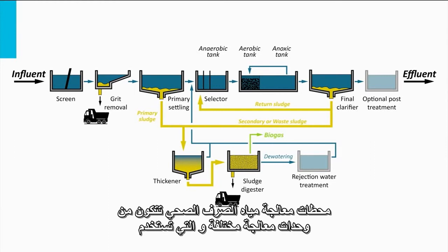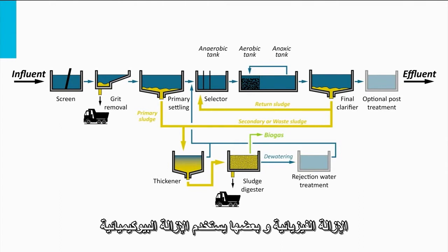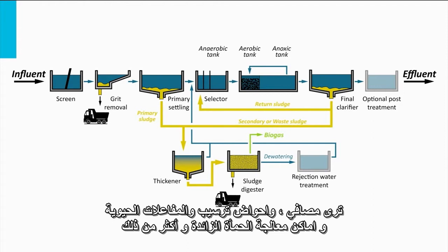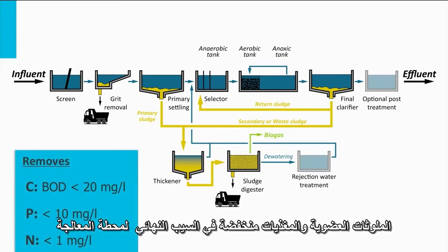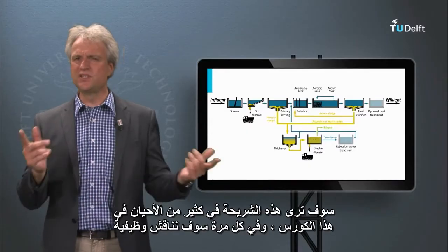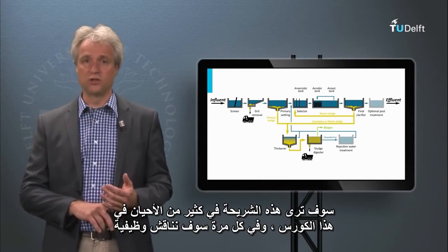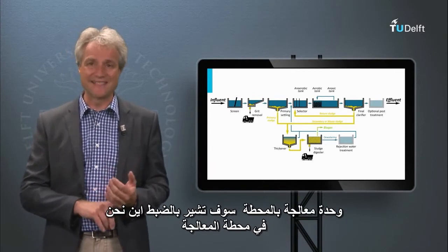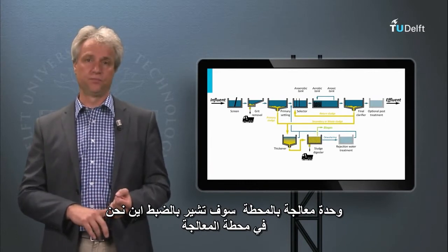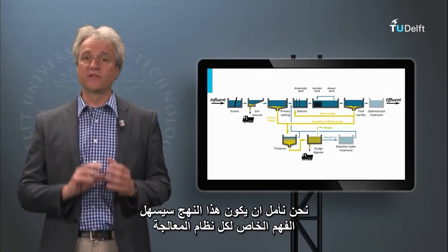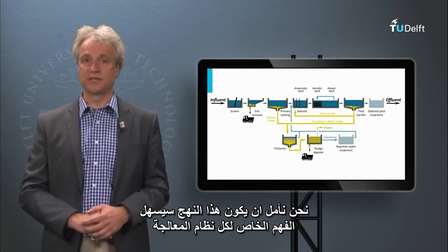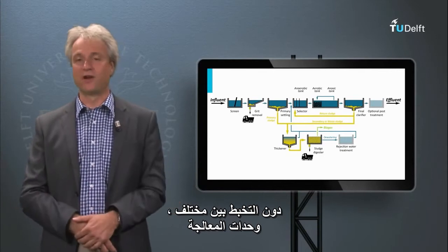The sewage treatment plant consists of various treatment units, of which some make use of physical removal and others of biochemical removal. You see screens, settling tanks, bioreactors, excess sludge treatment facilities and more. The effluent of the treatment plant is low in organic pollution and low in nutrients. You will see this slide very often in the course, and every time we discuss a functional unit inside this treatment plant, we will indicate exactly where we are in the treatment plant. We hope that this approach will facilitate your comprehension of the entire treatment setup, without getting lost in the various functional units.